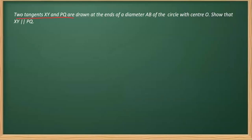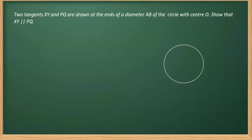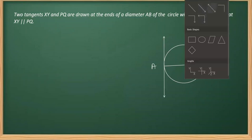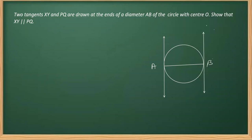In this question, two tangents XY and PQ are drawn at the ends of the diameter AB of a circle with center O, and we need to prove that these two tangents are parallel. First, we draw a circle, then draw the diameter AB, and then draw the two tangents — one on each end of the diameter — named XY and PQ.